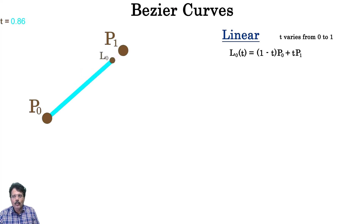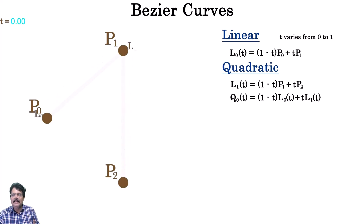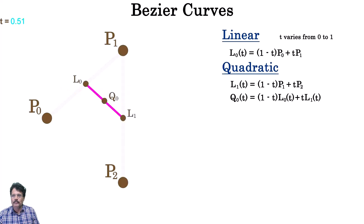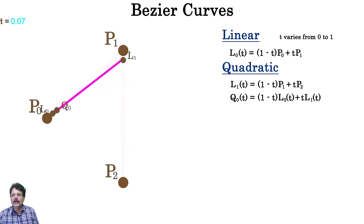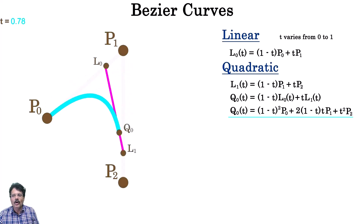Here is a visualization of how it works. Now what about drawing a curve? In this case we need three points and we use a quadratic function. First we do a linear interpolation between P0 and P1, another between P1 and P2, then interpolate between L0 and L1 to give us Q0. If we trace the path of Q0 it shows a curve going from the first point to the last point. The first and last control points are always the endpoints of the curve. This is what we call a quadratic Bézier curve.